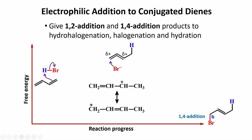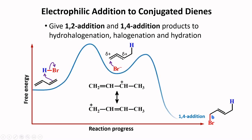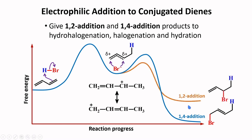We can represent this with a reaction coordinate diagram. If the bromine ion attacks the other carbon, we get 1,2-addition, with the substituents at carbon 1 and carbon 2. The 1,2-addition product is less stable than the 1,4-addition product because in the latter the double bond is more substituted.